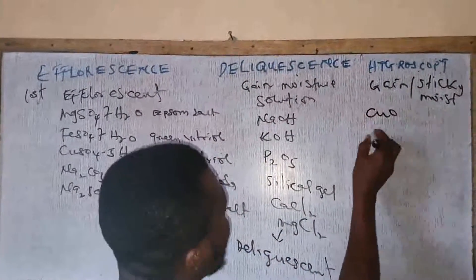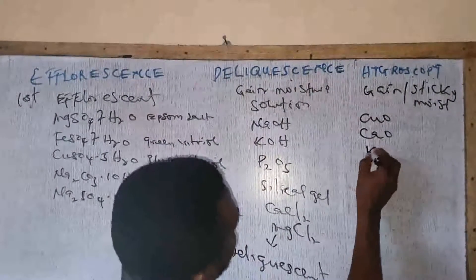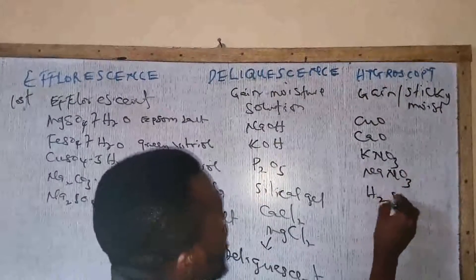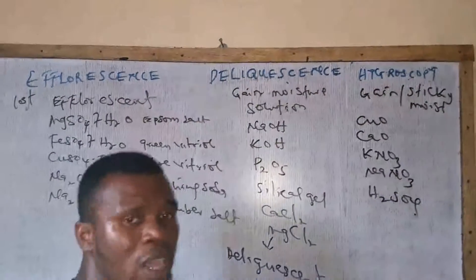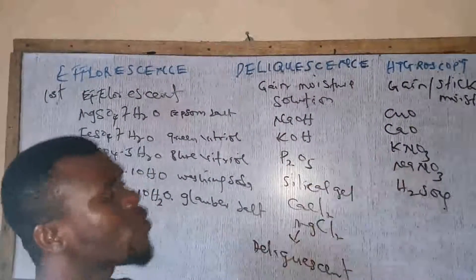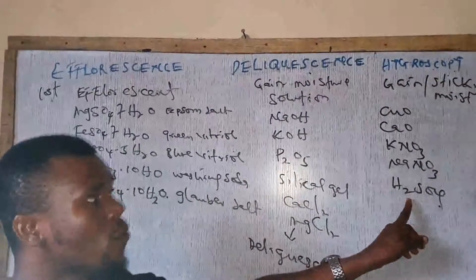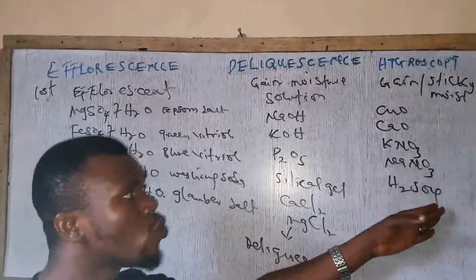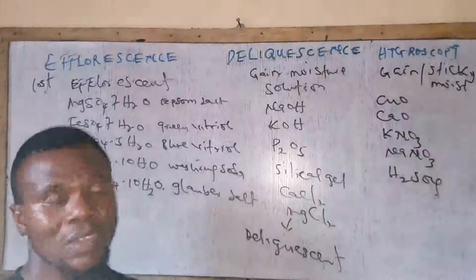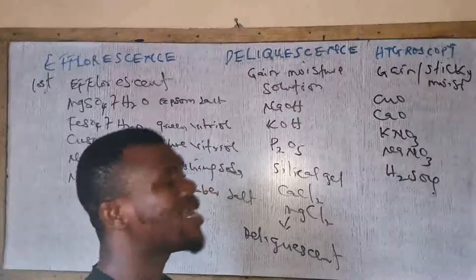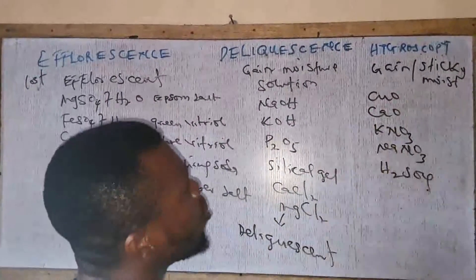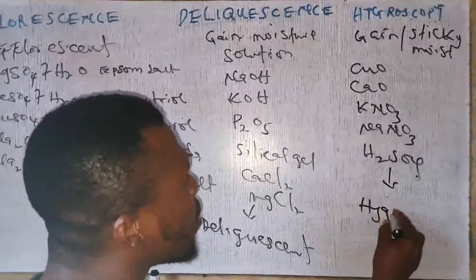Common examples of hygroscopic substances include copper oxide, calcium oxide, potassium nitrate, sodium nitrate, and sulfuric acid (H₂SO₄). Sulfuric acid exists in liquid form, while the others exist in solid form. It is a liquid hygroscopic substance — it absorbs moisture and can dilute itself to many times its original volume. All these are described as hygroscopic substances that exhibit hygroscopy.